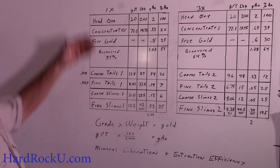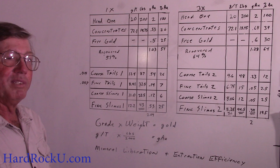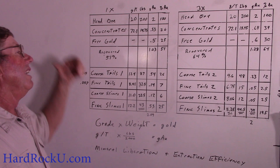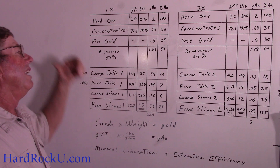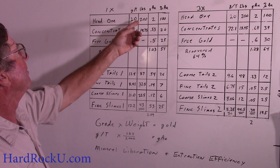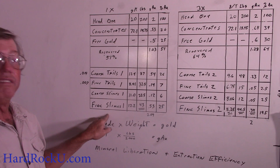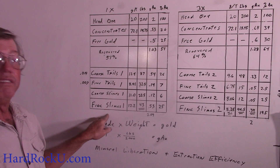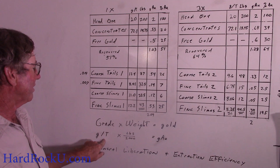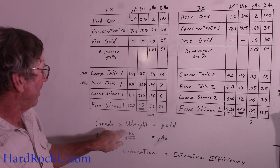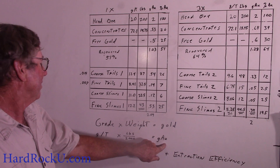This is the first time we ran it over the table. We ran it through the crusher, put it on the table, and whatever was rejected from the input screen at 0.030 inches went back to the crusher to get ground. Everything was ground just enough to get it through that 0.030-inch screen — that's why it says one time. The head ore is running 20 grams per ton. We had a 200-pound sample, which has 2 grams of gold in it. How did I get that number? If you take the grade times the weight, you will get the amount of gold. The grade is in grams per ton, so the weight has to be in tons. Since we have pounds, divide pounds by 2,000 to get tons, times grams per ton, equals grams of gold. Grade 20 times 200 divided by 2,000 gives you 2.